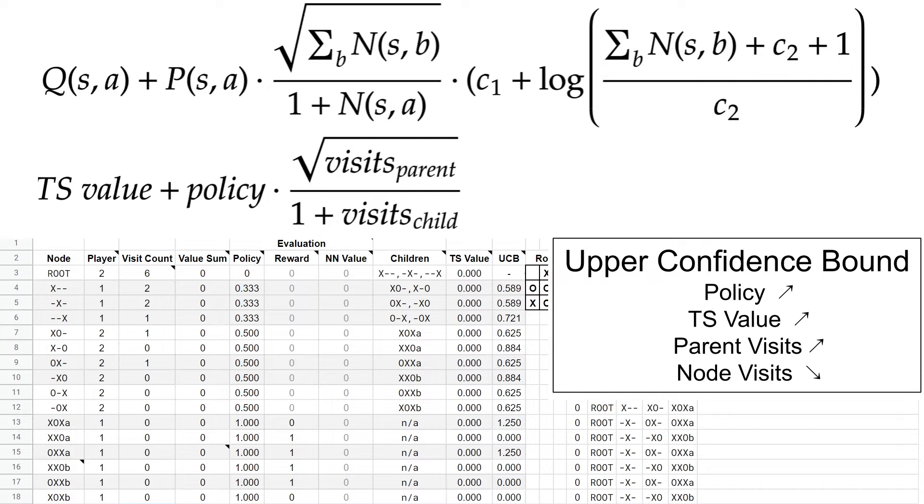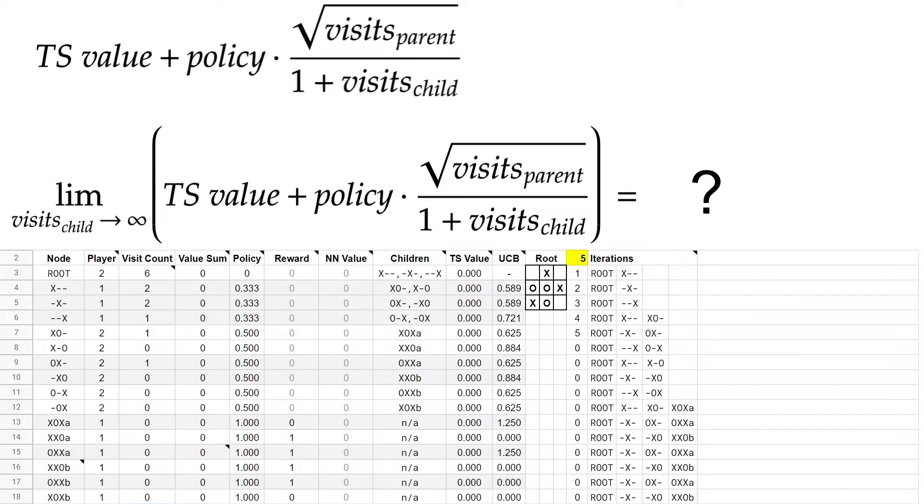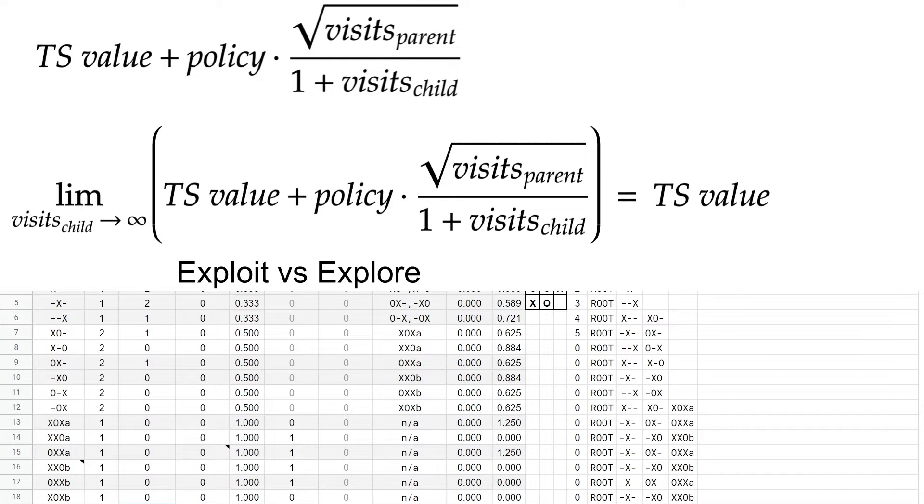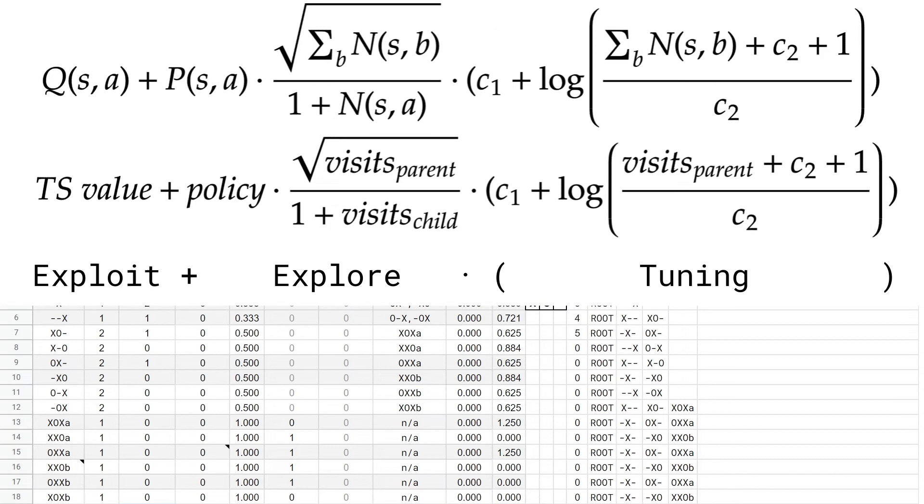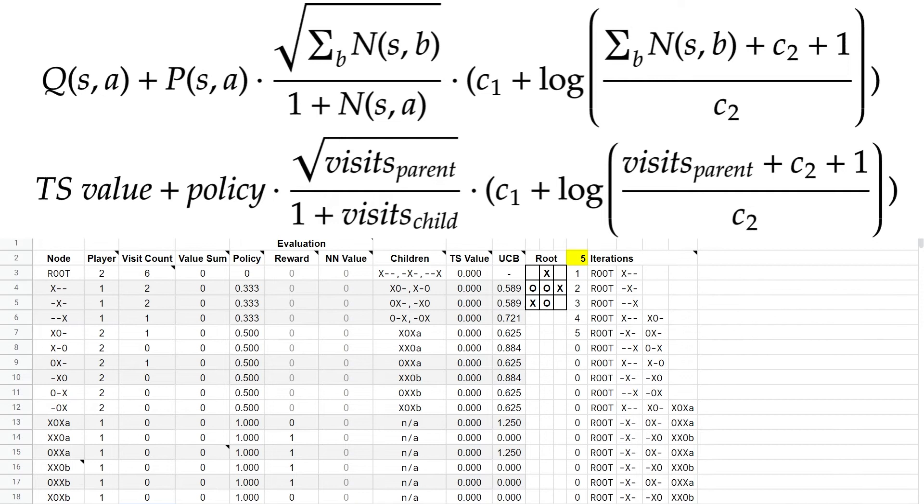The P function represents the policy, as noted in column E. When the policy goes up, the UCB also goes up, representing potentially better moves. The Q function represents the TreeSearch value. Computing the TreeSearch value involves adding rewards and values, and dividing by total visits. These have all been zero so far, because we have not found any winning moves yet. When we do find a winning move, the TreeSearch value will go up, as will the UCB. The N function corresponds to the number of times the TreeSearch algorithm has visited a particular node. Specifically, the algorithm uses the square root of the number of parent visits, divided by 1 plus the number of node visits. This is what I meant by parent visits making the UCB go up, and the number of node visits making the UCB go down. These four terms are the core of the UCB formula. Ignoring the rest for now, what happens if you could search indefinitely, and we visit this child node a large number of times? Pause the video now if you want a moment to think.